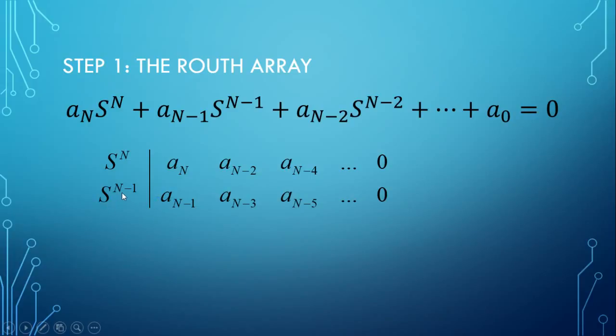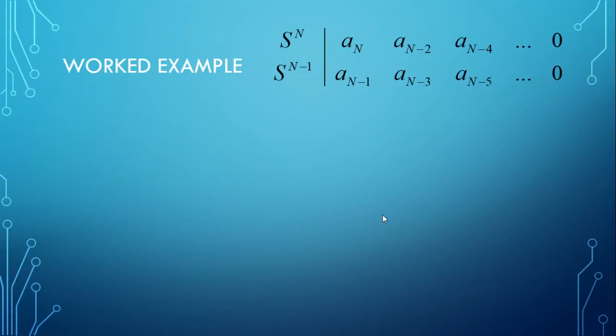Likewise, on the next one, S to the power of N minus 1, we are starting with coefficient A to the N minus 1, which goes there. We skip N minus 2, taking us to N minus 3. Then we skip N minus 4, leaving us with N minus 5. And on the end, we just put zeros. So you just follow that procedure, and we can fill it in. Hopefully, it'll make more sense when we start using numbers.